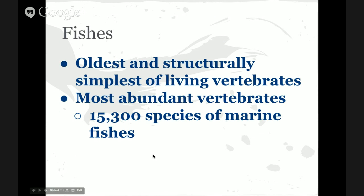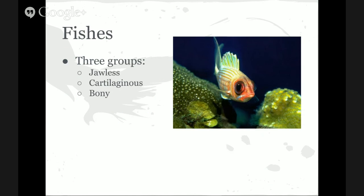Fishes are some of our oldest and structurally simplest of living vertebrates, and they are the most abundant of all the vertebrates. There are around 30,000 species of fish, making up about half of all the vertebrates, and about 15,000 species of fishes are marine — about half of those 30,000 species. Marine fishes fall into three different groups: jawless fishes, cartilaginous fishes, or bony fishes.